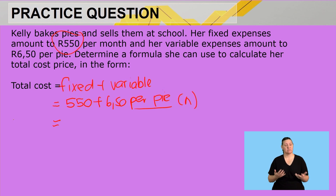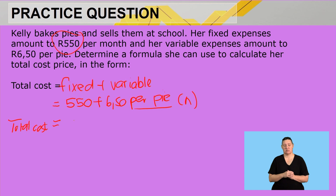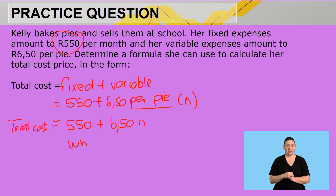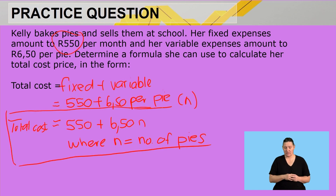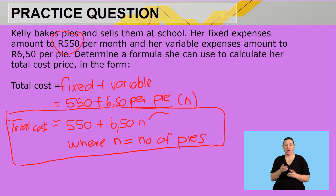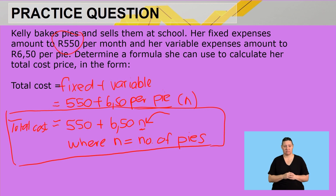So my total cost is going to be R550 plus R650 times N, where N is the number of pies. Every time we want to calculate our total cost, we are going to use this formula and substitute the number of pies that we will be baking into the formula in the place of N.